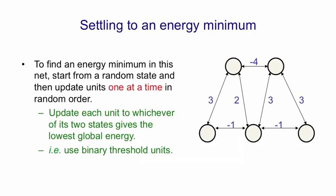So by following the binary threshold decision rule, a Hopfield net will go downhill in its global energy. One way to find an energy minimum in a Hopfield net is to start from a random state and then update the units one at a time in random order. So we're doing a sequential update. And for each unit that you pick, you compute whichever of its two states gives the lowest global energy and you put it in that state, independent of what state it was previously in. That's equivalent to saying you just use the binary threshold decision rule.